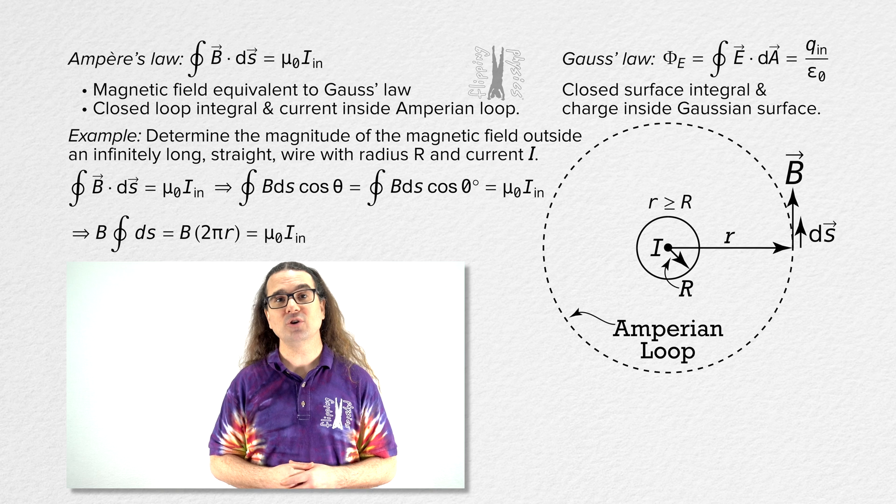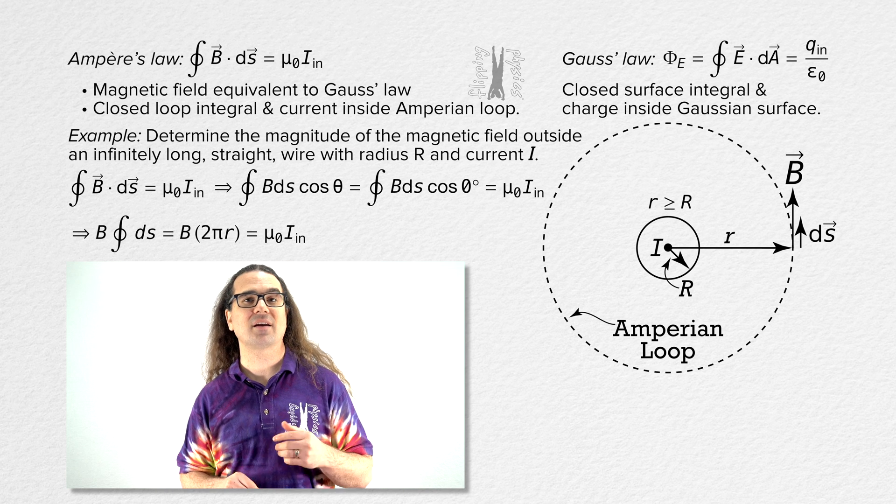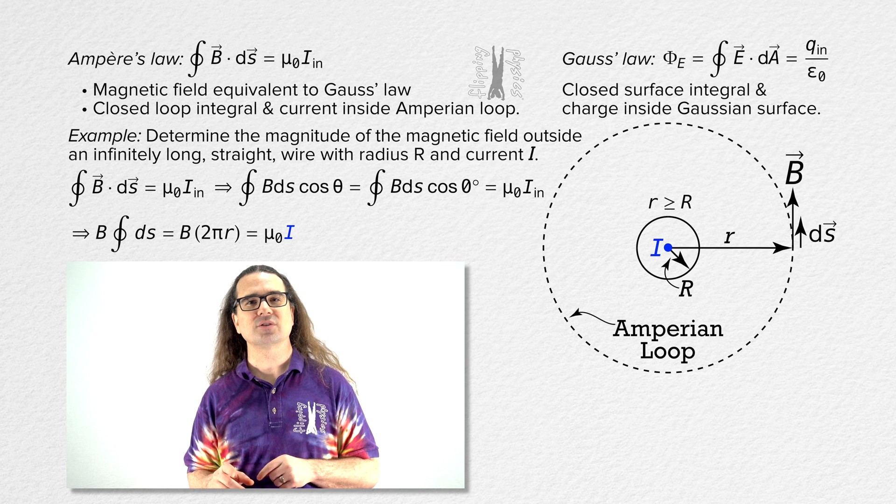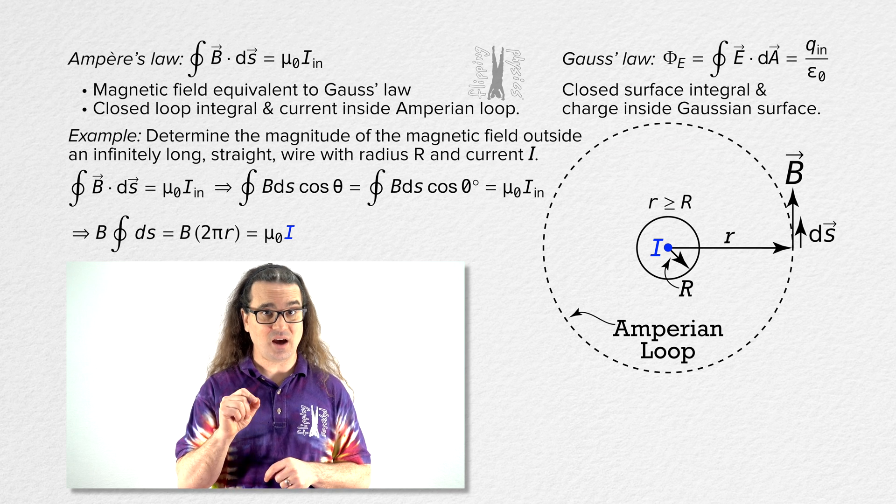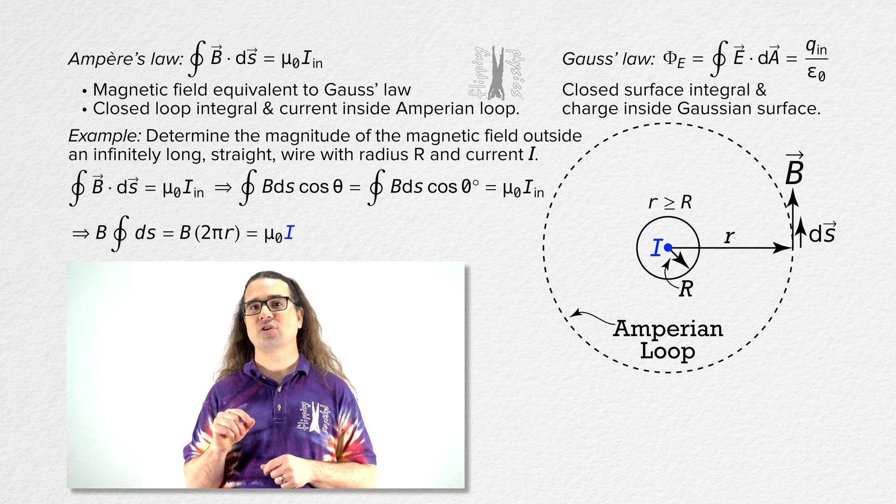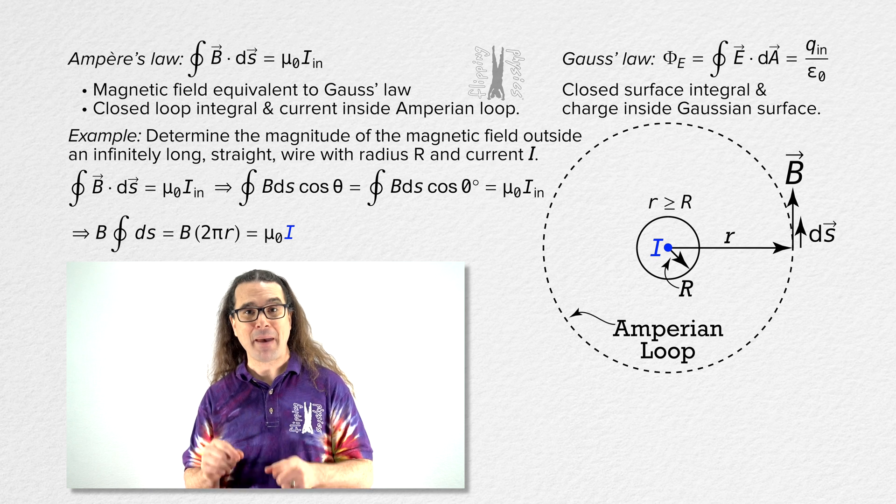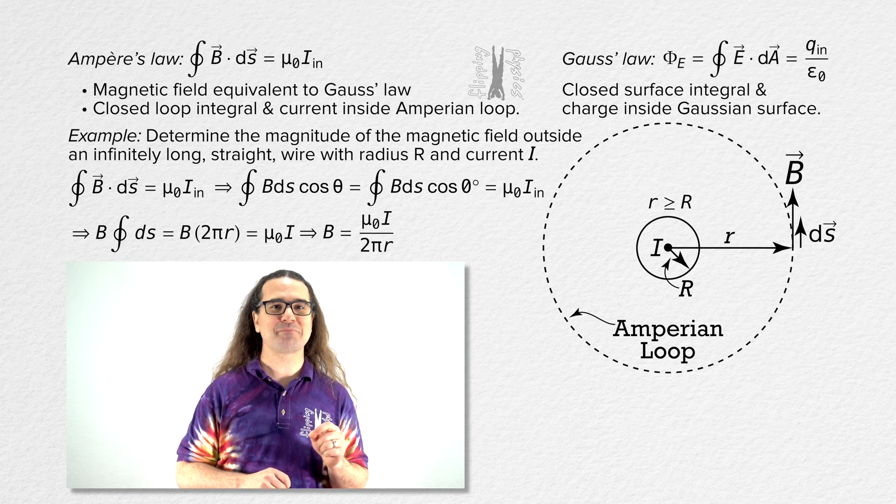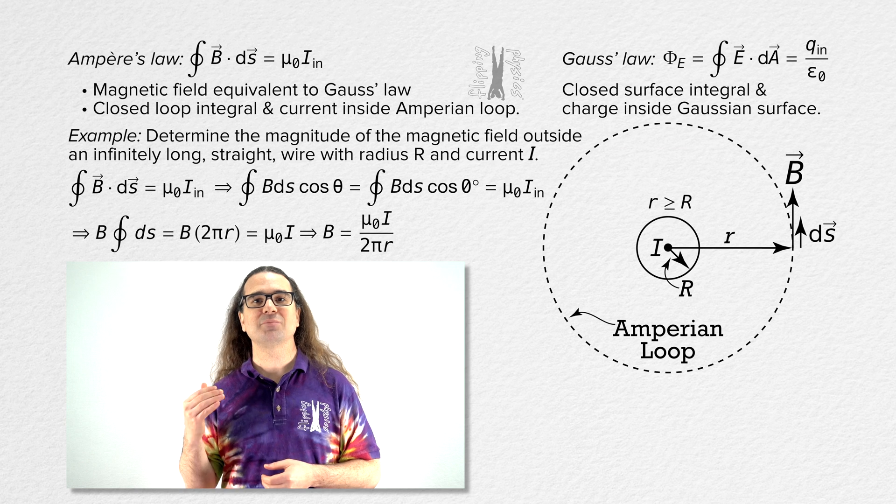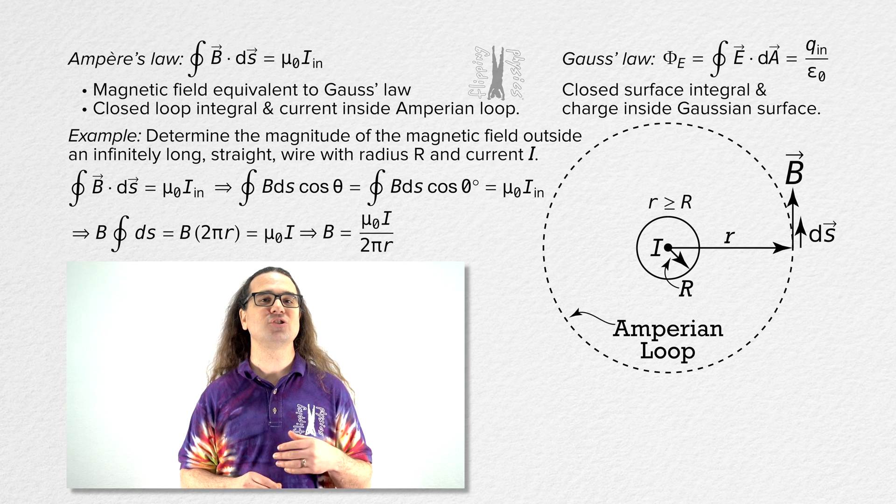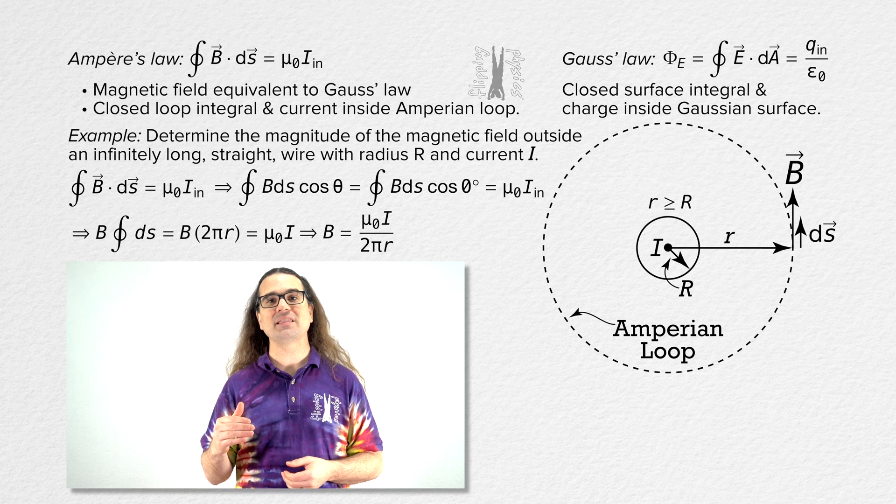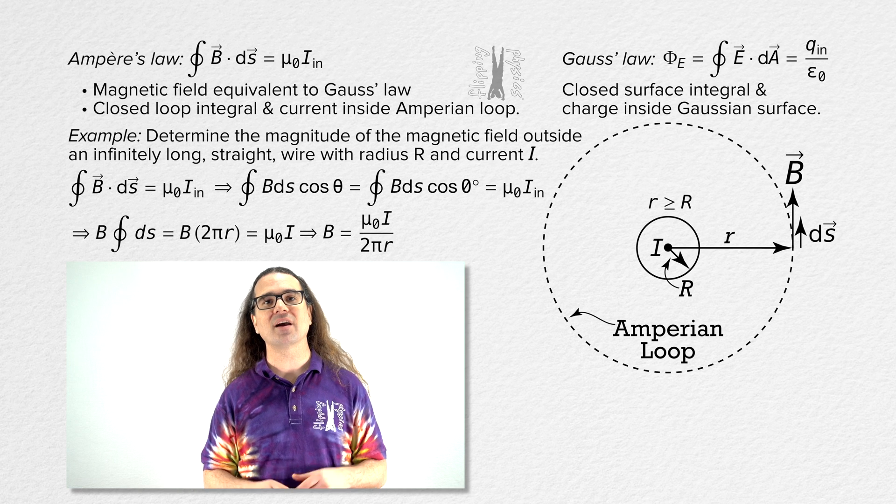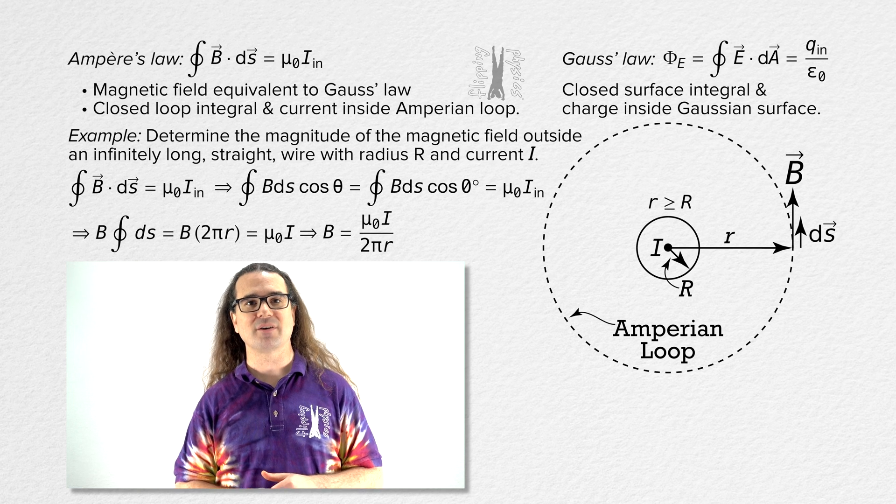And the current inside the Ampereian loop is just the current in the wire capital I. In other words, we just arrived at the magnetic field around and outside of an infinitely long straight current-carrying wire has a magnitude equal to the magnetic permeability of free space times current all divided by the quantity 2 pi times the distance to the wire. Therefore, proving that the magnetic field caused by a wire decreases as you get farther from the wire.